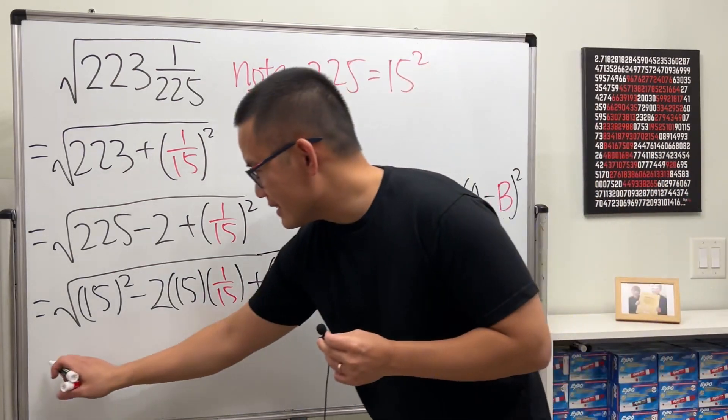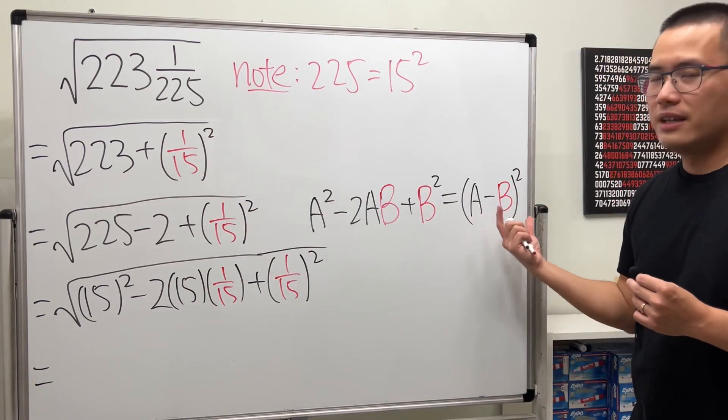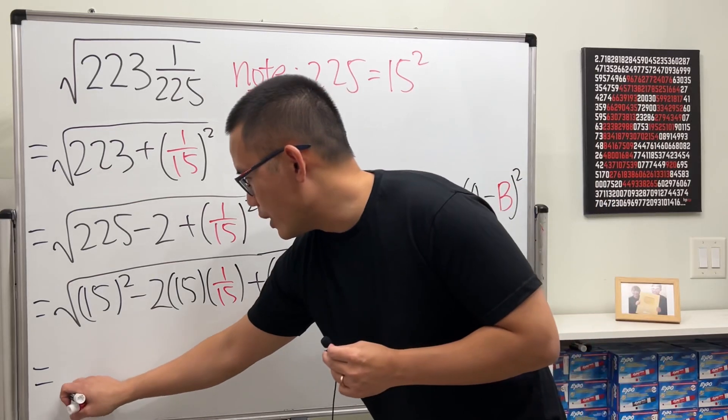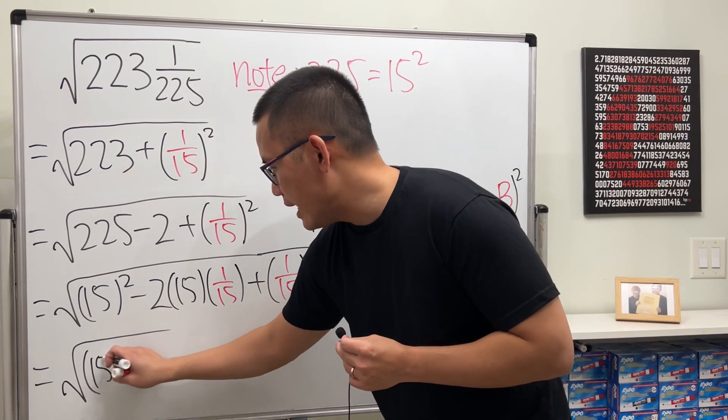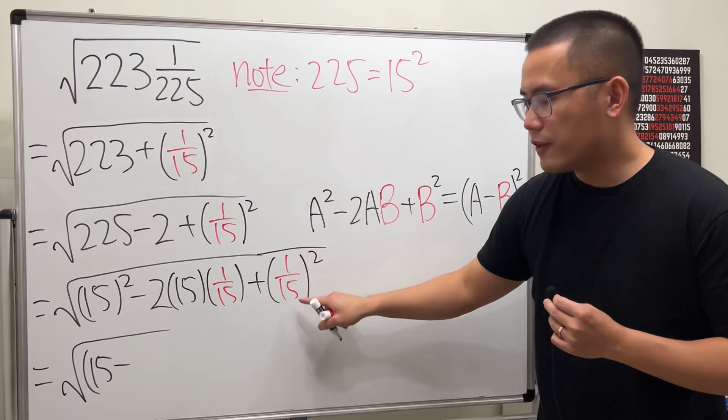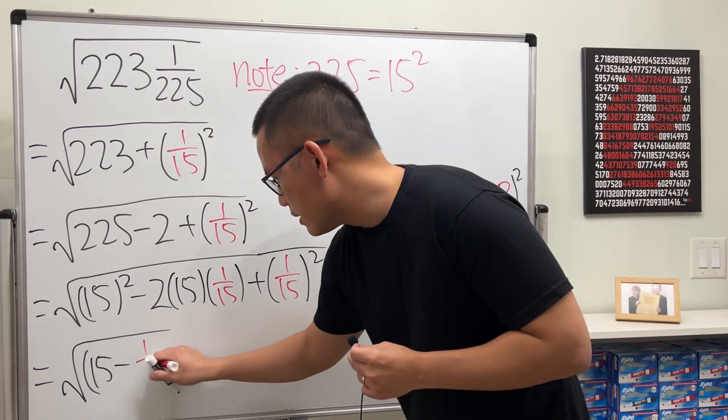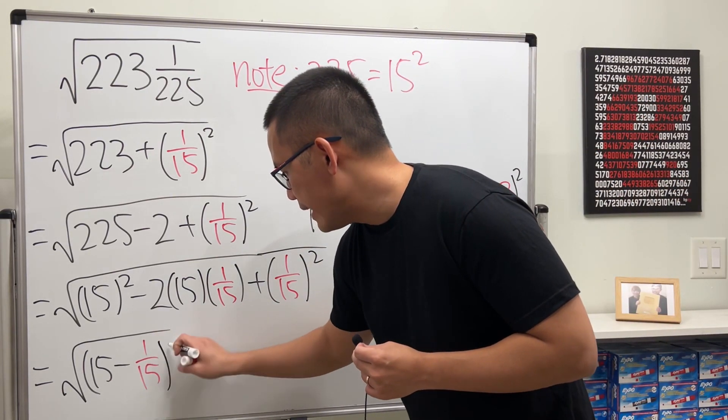So, in fact, the inside, we can just put it together like so. So, we have the square root, parentheses, 15 for the a, minus 1 over 15 for the b, and then squared.